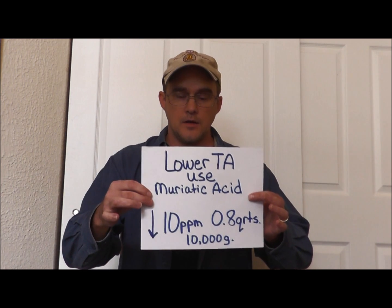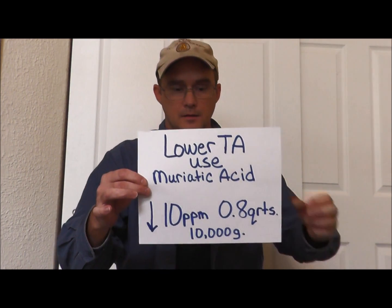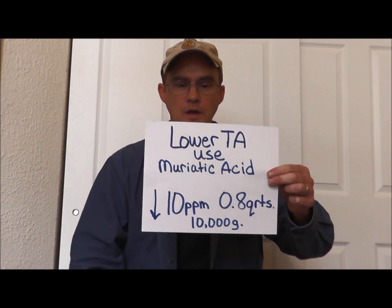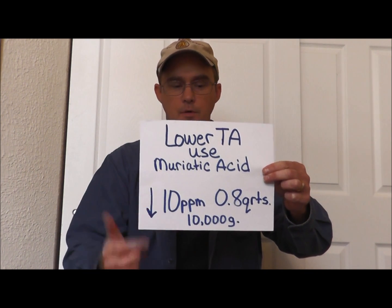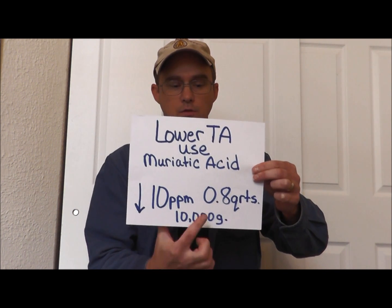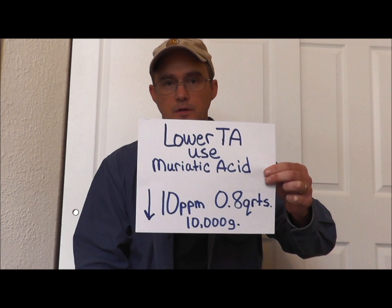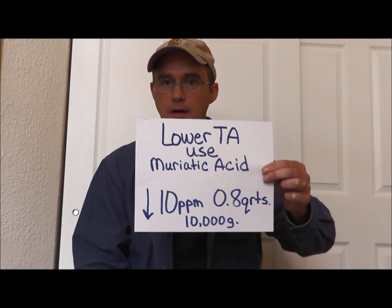Here are the numbers you need. To lower your alkalinity 10 parts per million per 10,000 gallons, you'll use 0.8 quarts — almost 1 quart — of muriatic acid.